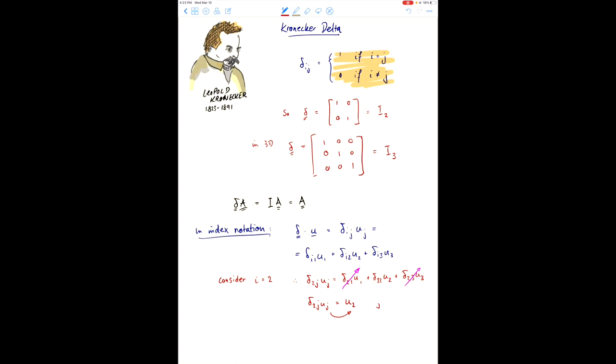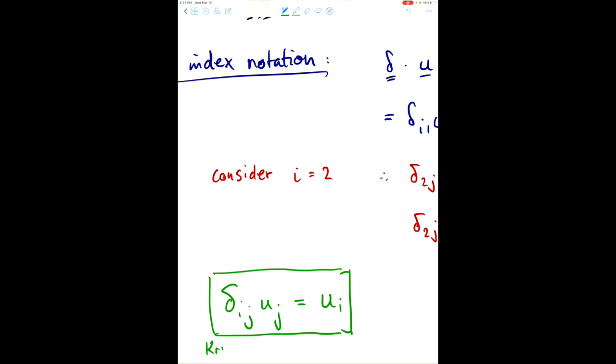So, the j is transformed to 2, i.e., the j becomes the value that the i took. So, in general, we write this as delta ij uj is equal to ui.